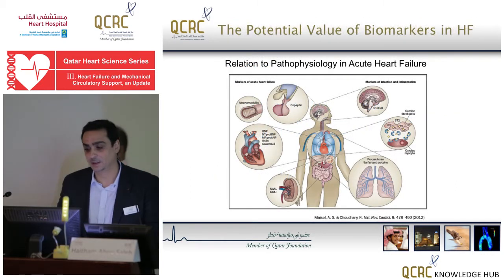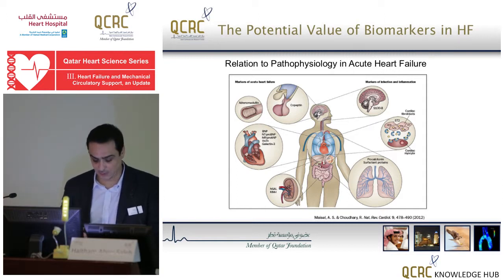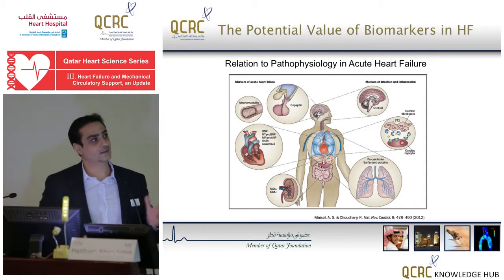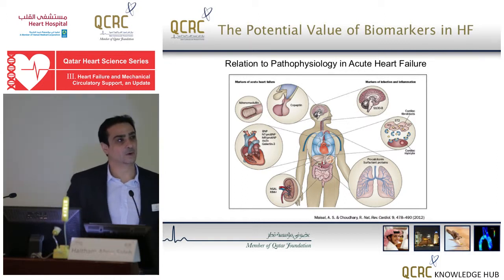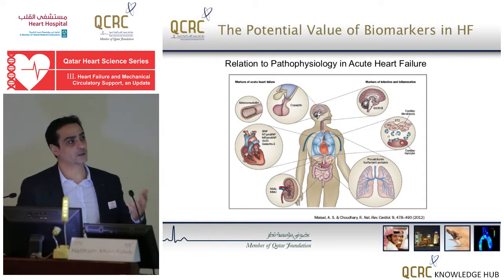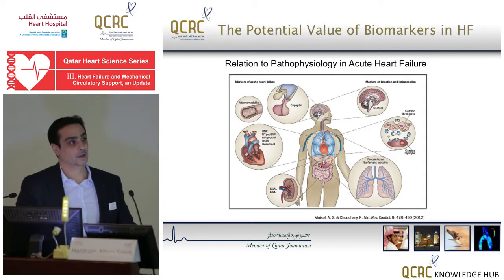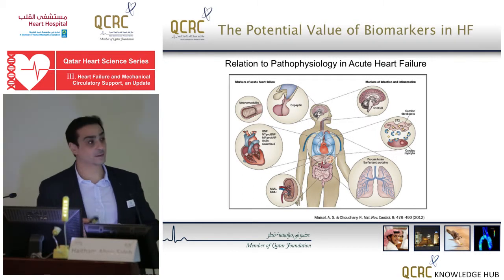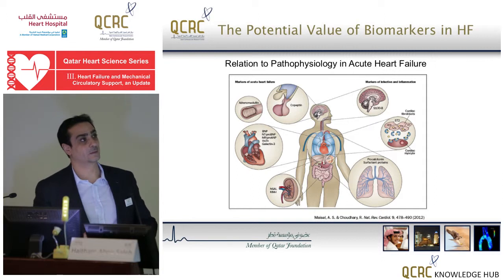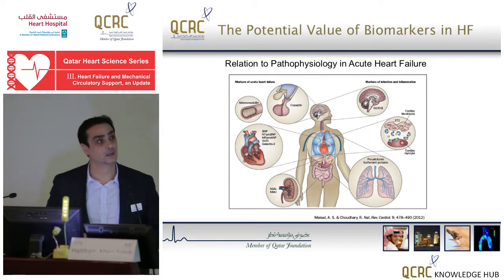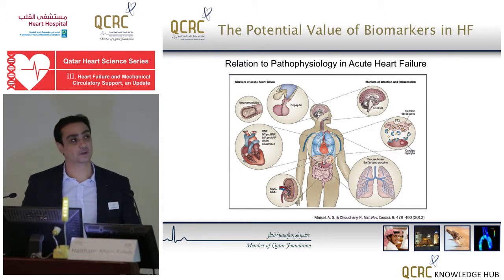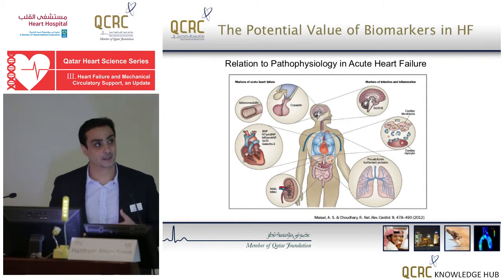What is the relation to pathophysiology in acute heart failure? As you can see in this cartoon, acute heart failure is a systemic illness which involves a large number of organs and organ systems in the body. For example, we can have biomarkers that are released from the adrenal system, the cardiovascular system, the vascular bed, as well as the neuroendocrine system, and also biomarkers that are released from organs involved in the inflammatory reaction.